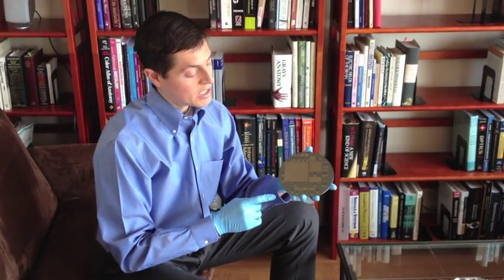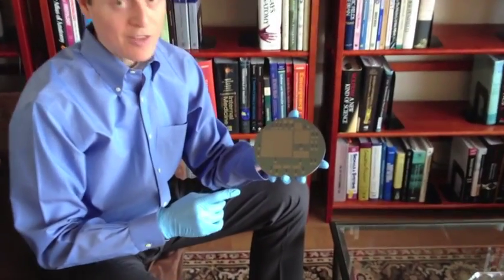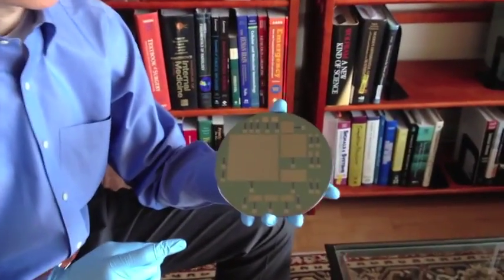This is a silicon wafer. It's the same material used to make all kinds of microchips, including the ones inside your laptops and electronic gadgets. On this particular wafer, I've made the most important part of the fuel cell, the anode.